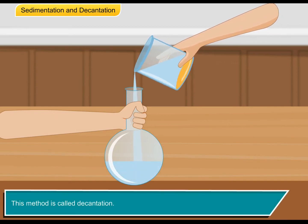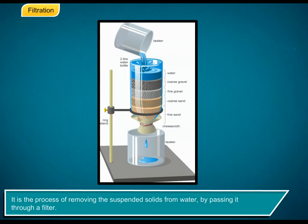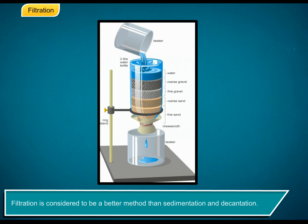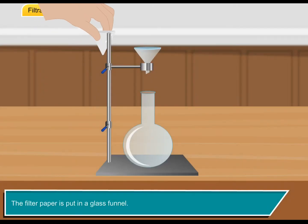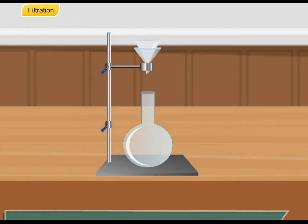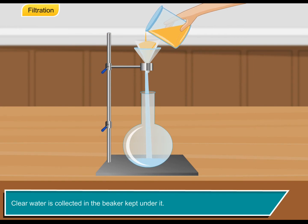This method is called decantation. Filtration is the process of removing the suspended solids from water by passing it through a filter. Filtration is considered to be a better method than sedimentation and decantation. In a laboratory, filtration is done using a filter paper. The filter paper is put in a glass funnel. Muddy water is poured into the filter paper in the funnel. Clear water is collected in the beaker kept under it. The mud remains in the filter paper.